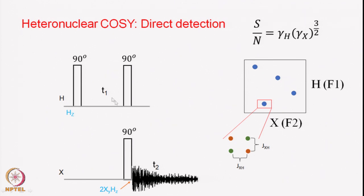There will be transfer of magnetization from proton to the carbon or to the nitrogen, whatever the X nucleus is, and then after that you detect the signal of this nucleus. You detect the X nucleus during the T2 period. During the T1 period the proton magnetization evolves with its characteristic frequencies, and with the pair of 90-degree pulses applied simultaneously you transfer coherence from the protons to the X nucleus, which is then detected during T2.